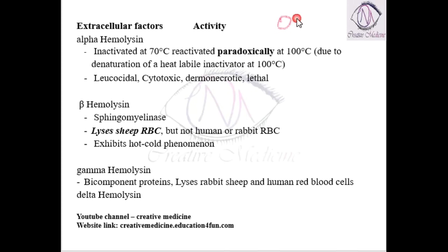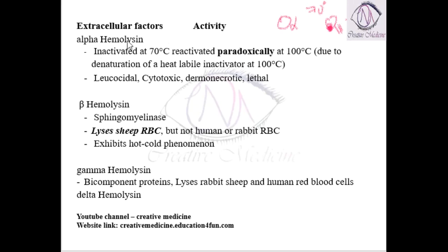In the alpha hemolysin, there is an alpha component. At 70 degrees Celsius, this alpha component is inactivated because there is a heat labile component present within the alpha hemolysin. At 100 degrees Celsius, this heat labile component is itself inactivated, and thus the enzyme becomes active again. Alpha hemolysin is also leukocidal, cytotoxic, it causes dermonecrosis, and it shows a lethal effect.